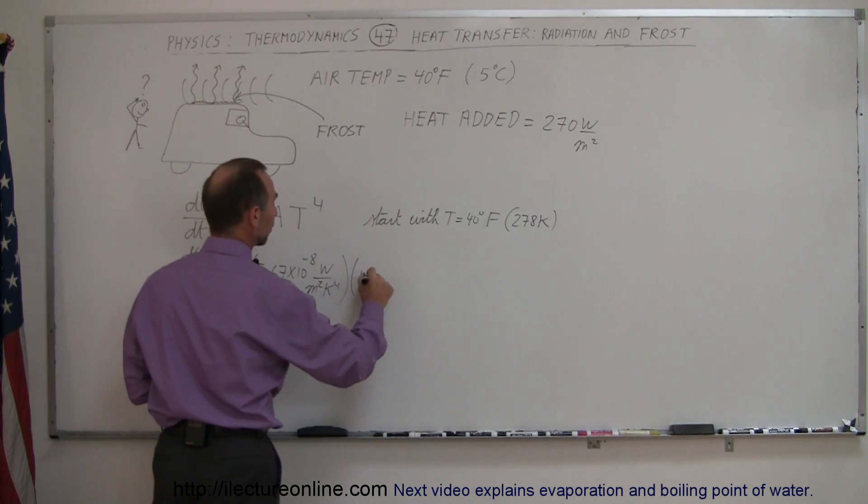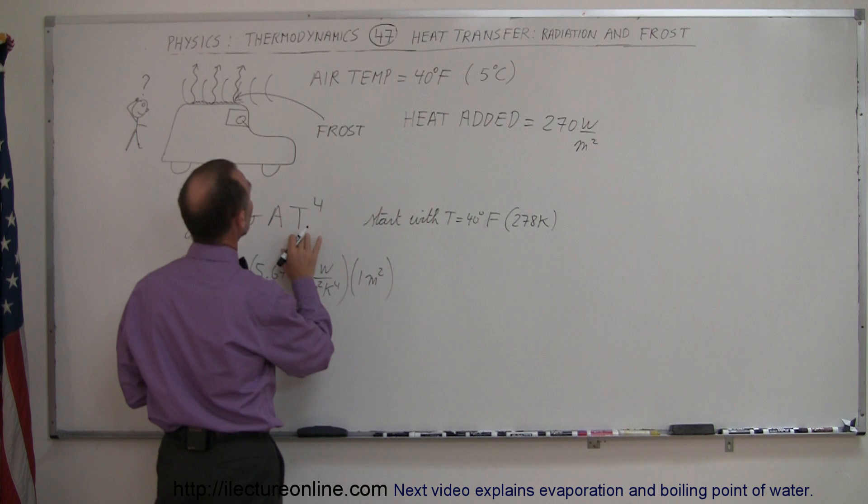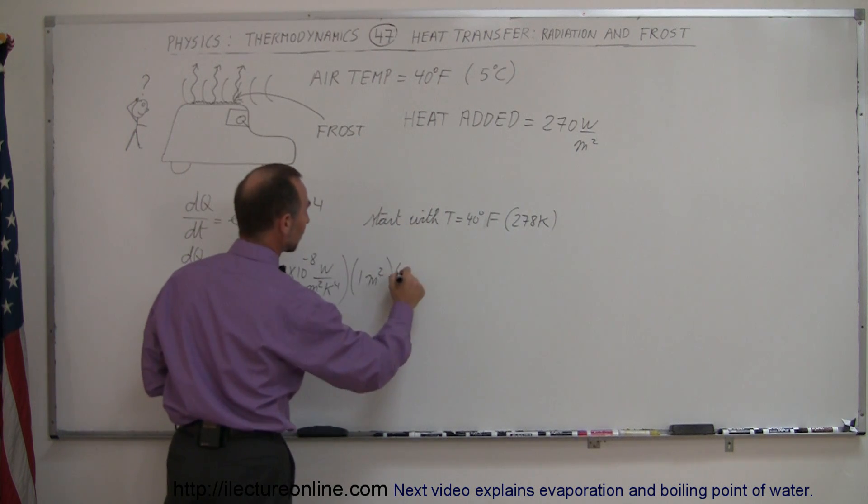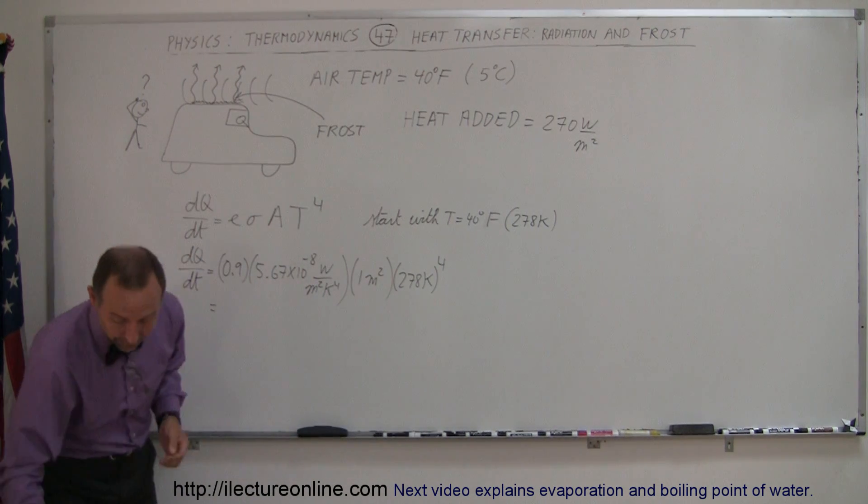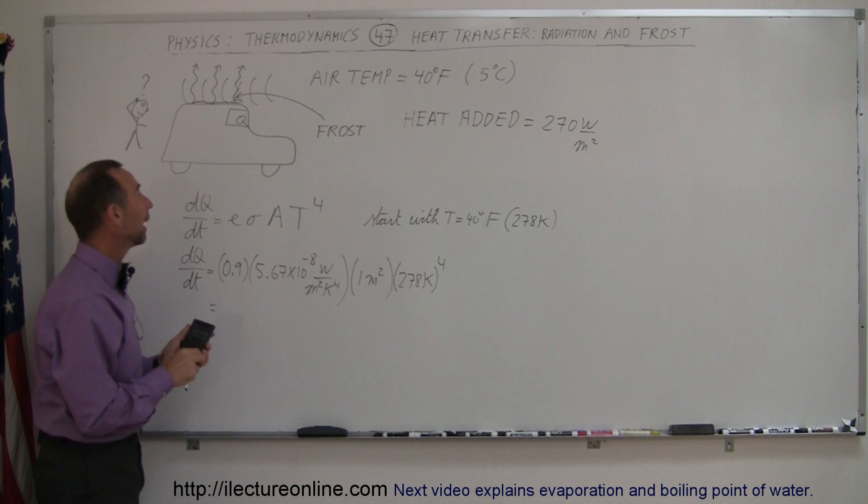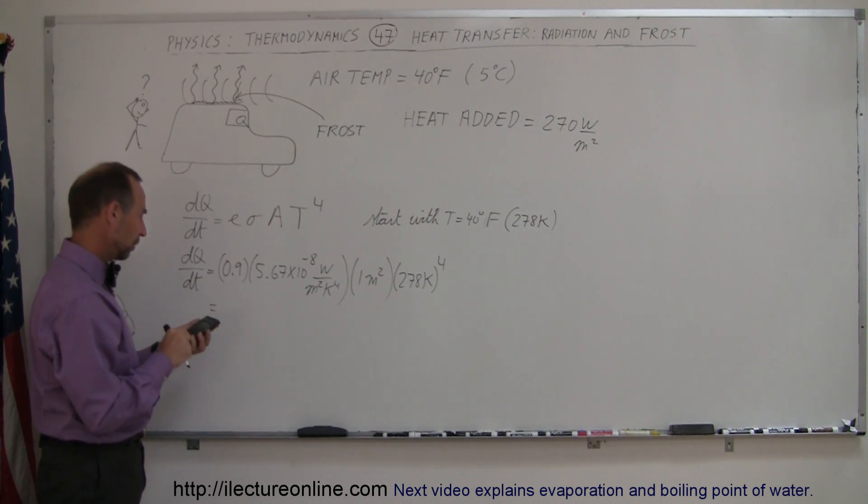Area, we're going to consider one square meter, and then the temperature to the fourth power - that would be 278 Kelvin raised to the fourth power. What would then be the heat being emitted by that car?